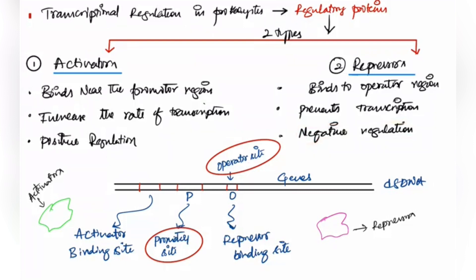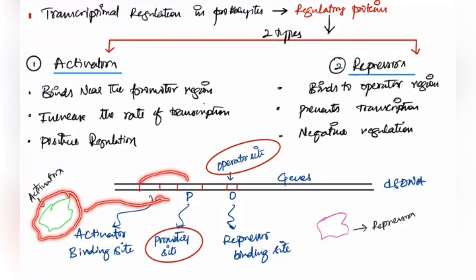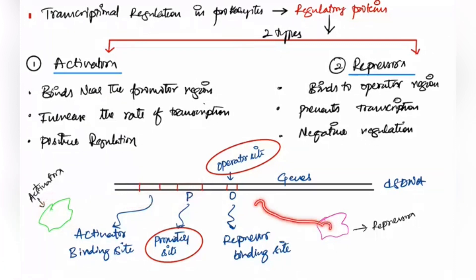Diagrammatically, in the double-stranded DNA, there is a promoter region, an operator region, and the genes. Activators generally bind upstream near the promoter sites, while repressors will bind to the operator site. We will discuss in detail what happens when activators and repressors bind to the double-stranded DNA.